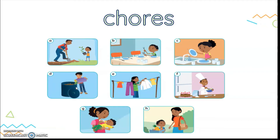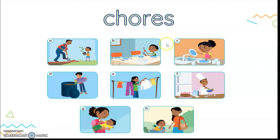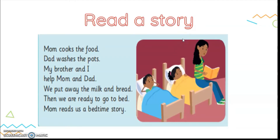Picture E: drying the clothes after you wash them — hang them under the sun. Picture F: baking in the kitchen. Picture G: feeding the baby. Picture H: going to the market and buying groceries with your mom. These are examples of chores that you can do to help your family members.